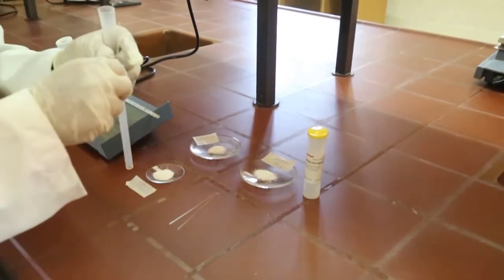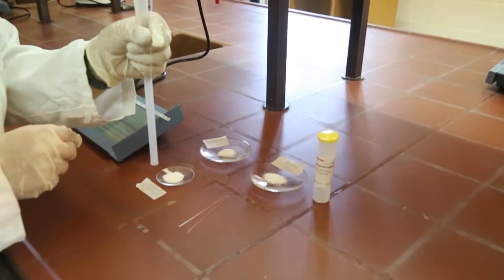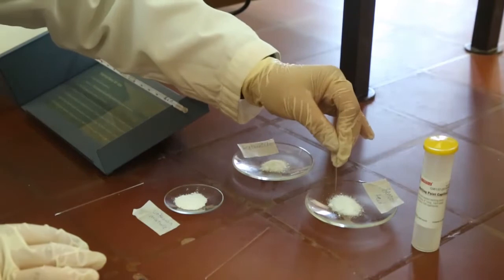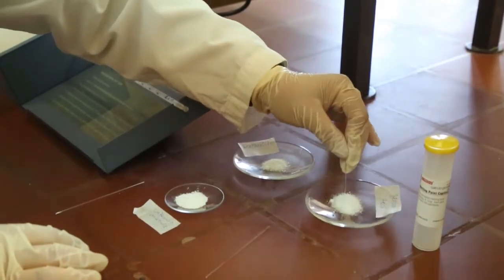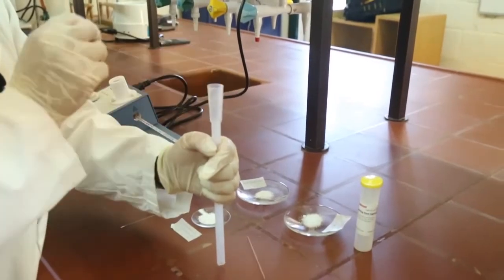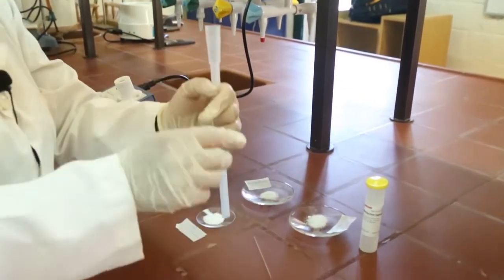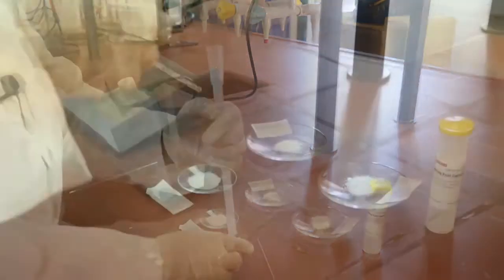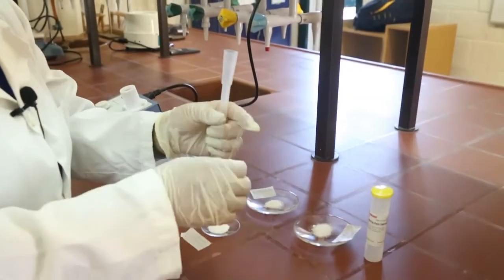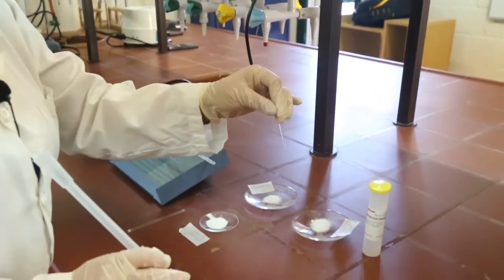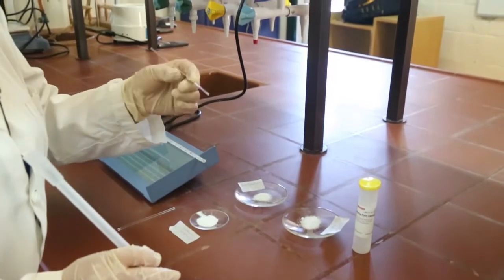This is the first tube filled with acetanilide. Now, I will fill the benzoic acid into the capillary tube. And I will prepare the capillary tube of a mixture of 50% acetanilide and 50% benzoic acid.